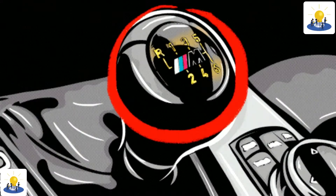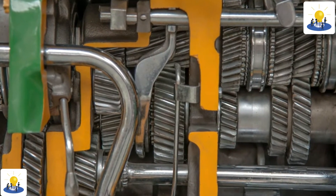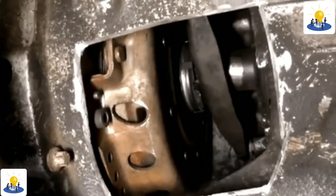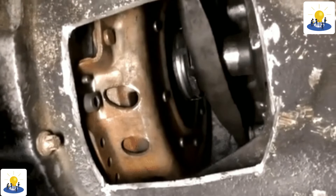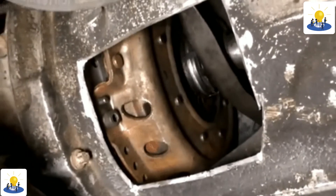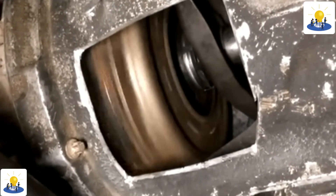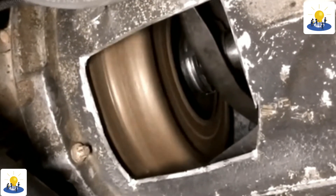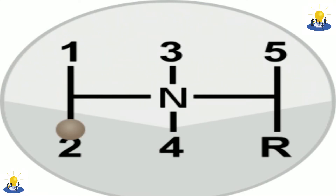Early automobiles used sliding mesh manual transmissions with up to three forward gear ratios. Since the 1950s, constant mesh manual transmissions have become increasingly commonplace and the number of forward ratios has increased to five-speed and six-speed manual transmissions for current vehicles. The alternative to a manual transmission is an automatic transmission.